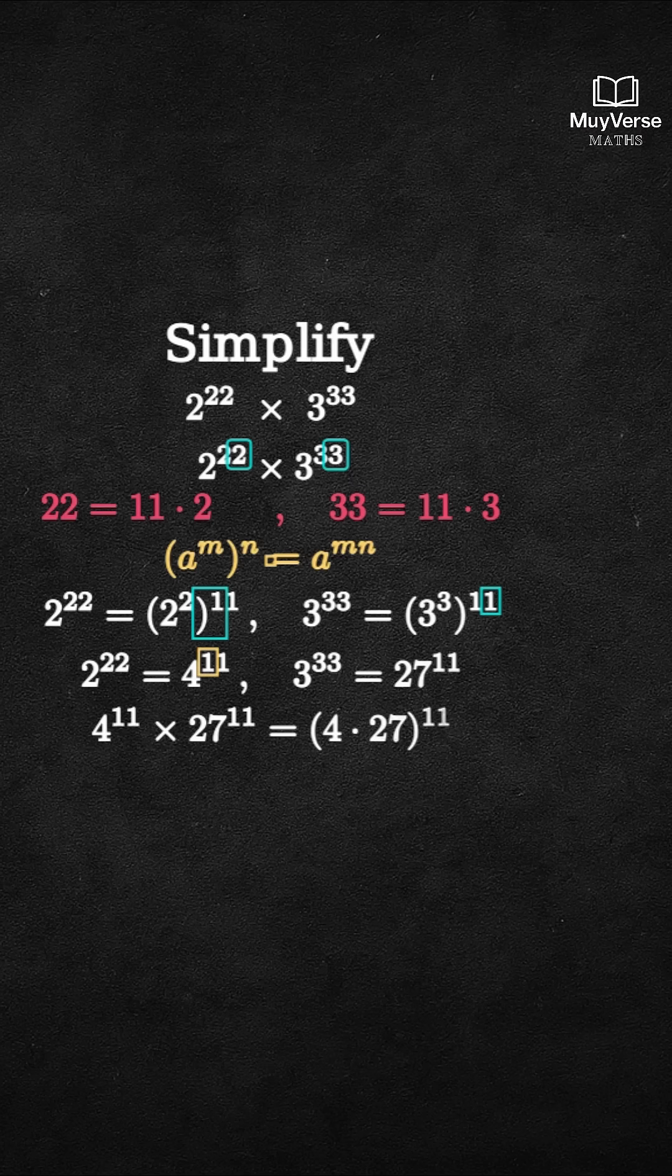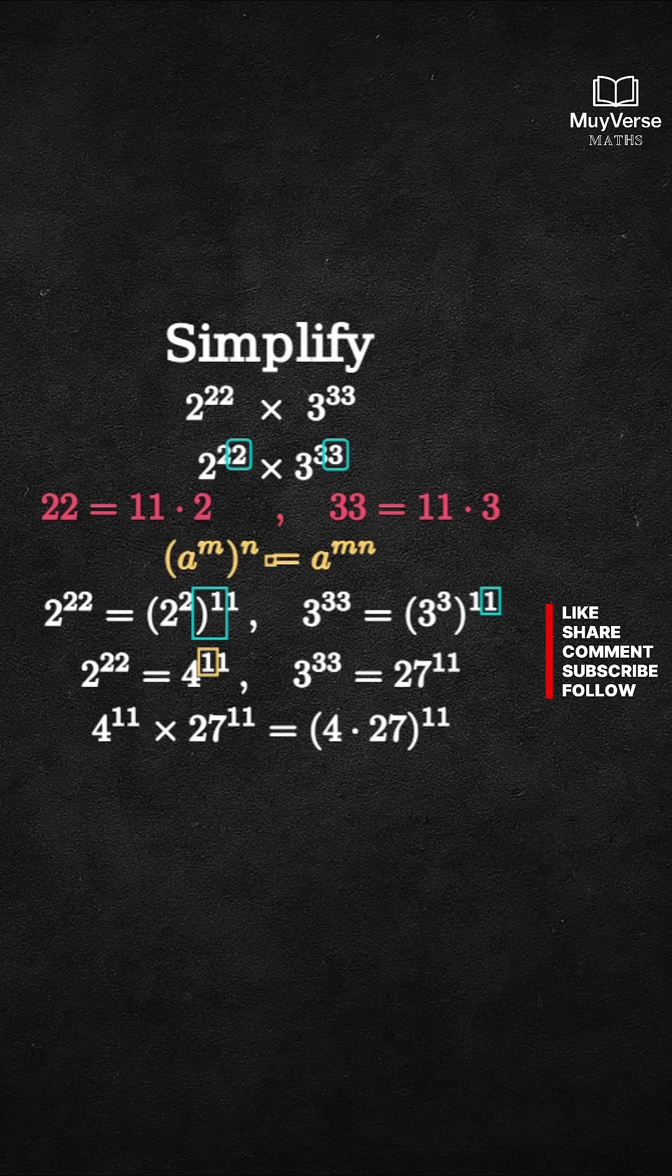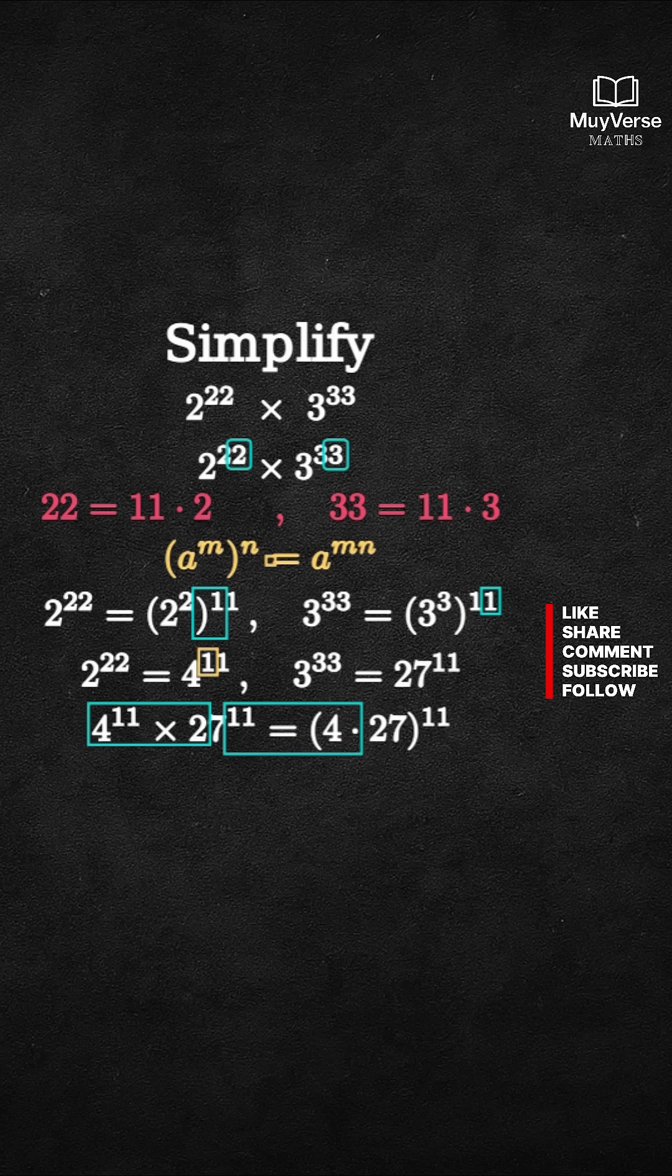Step 6. Compute the base product. 4 times 27 equals 108. Step 7. Write the compact final form: (108)^11.